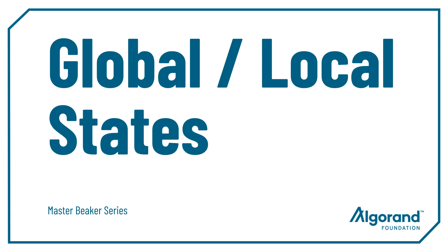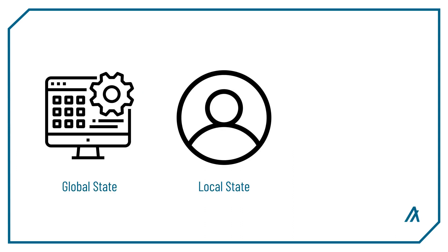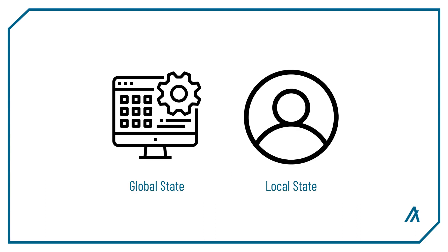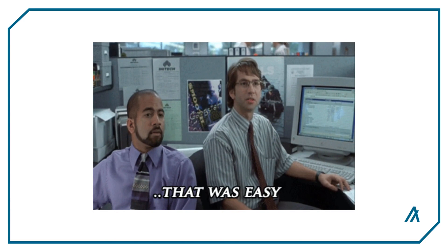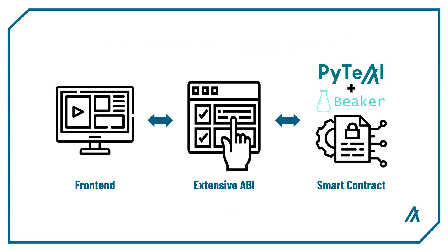Hello everyone, my name is Chris Kim and in this video we're going to learn how states work with the Beaker framework. The Algorand blockchain has three types of states: global state, local state, and box storage. In this video we're going to cover global state and local state, and box storage will be covered in a later video. With Beaker it's much easier to customize and keep track of all of the states you want in your smart contract. Also, Beaker creates an extensive ABI that includes state information that the front end can use and reference when interacting with the smart contract.